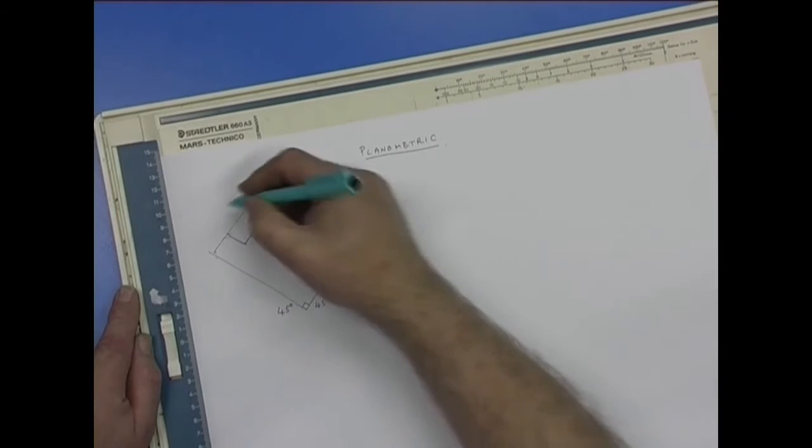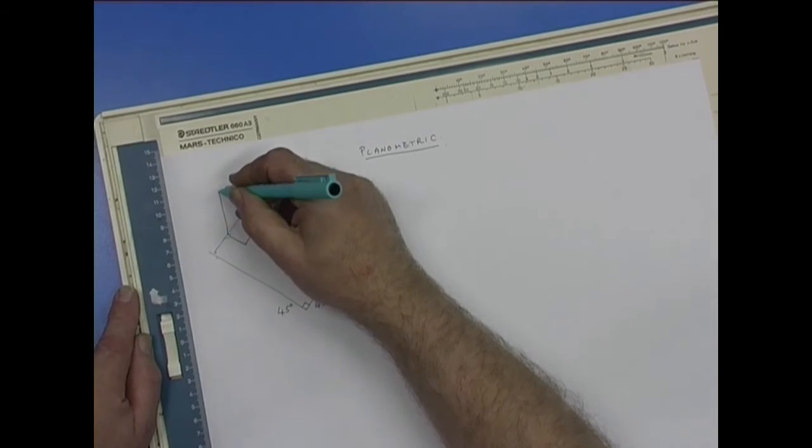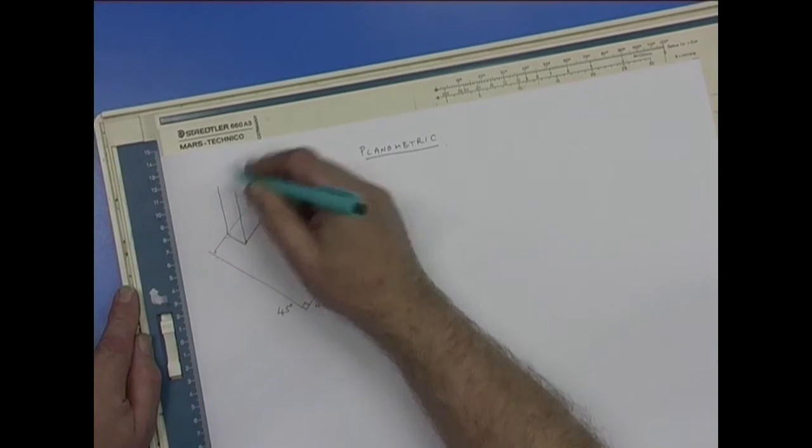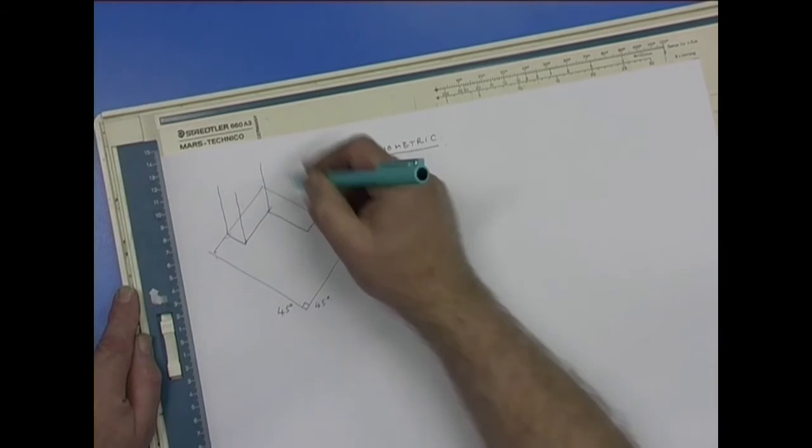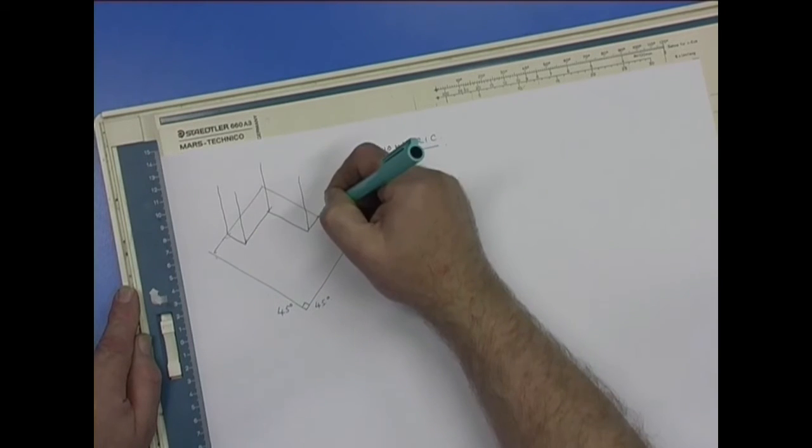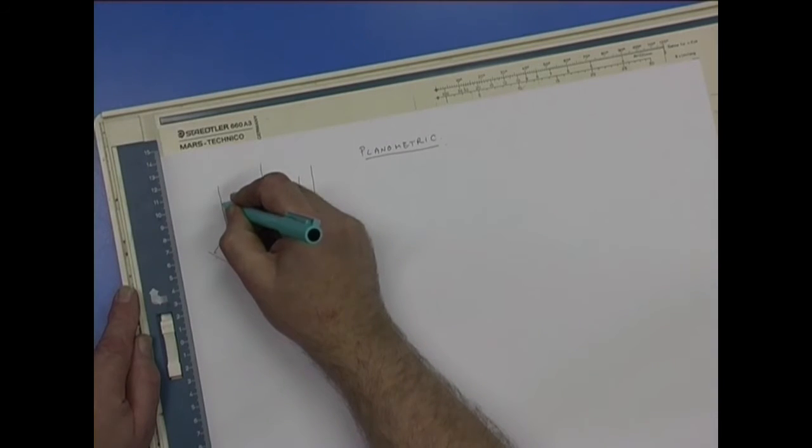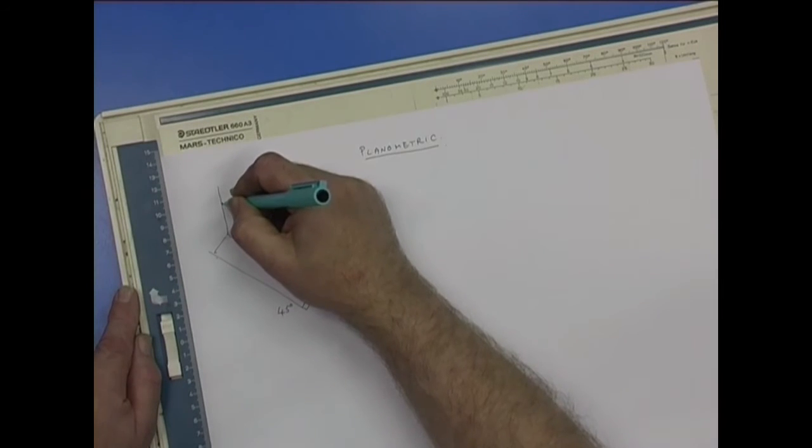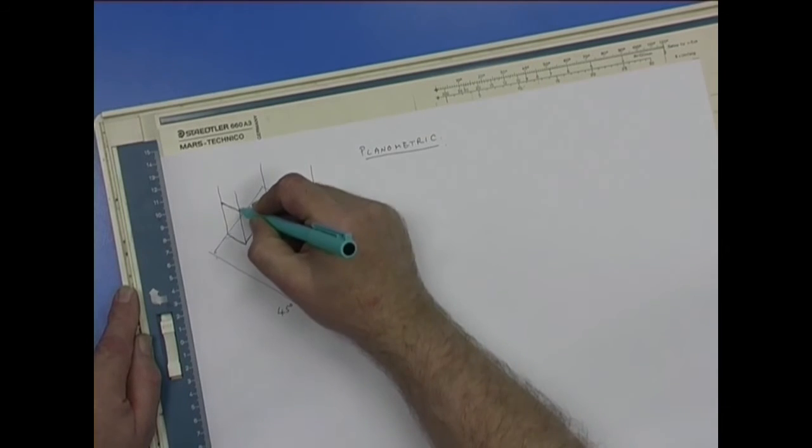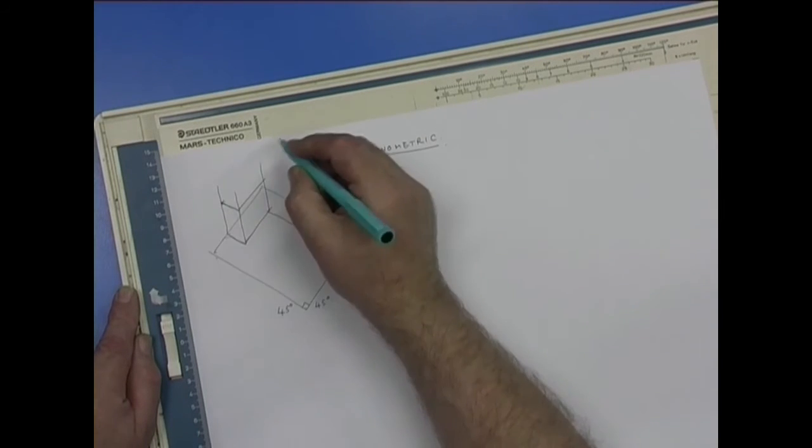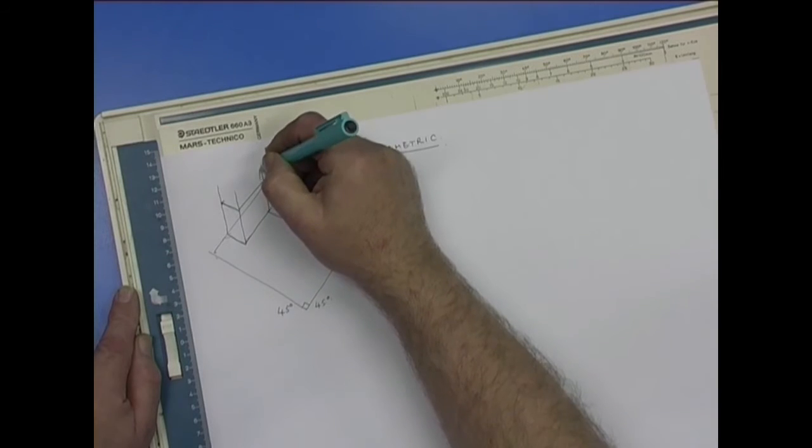And then you project up vertically your heights. You would take your height of the worktop and project down parallel on the base. The back corner would be projected up.